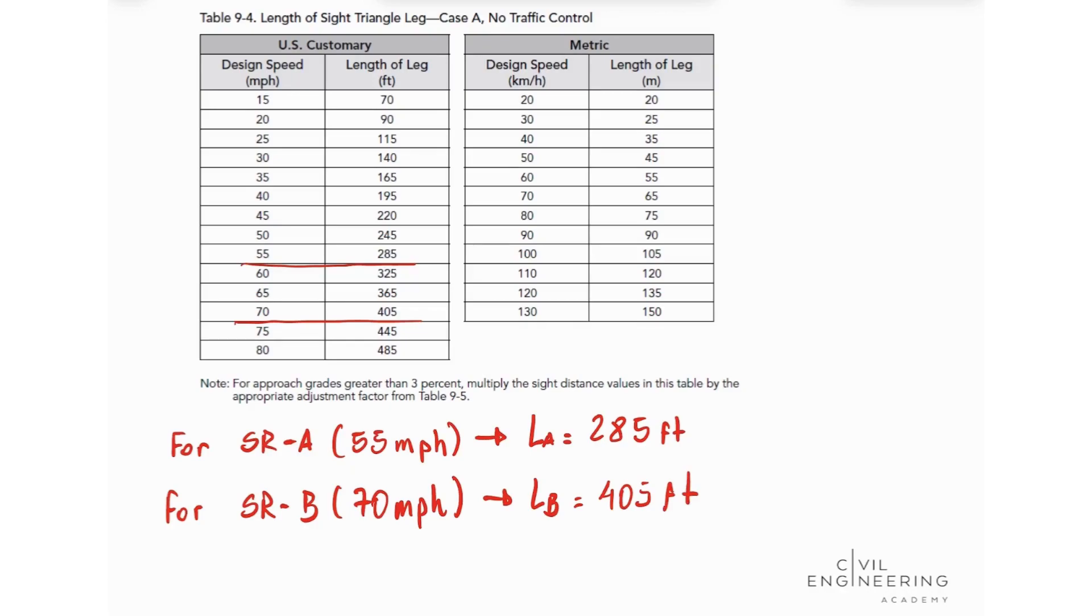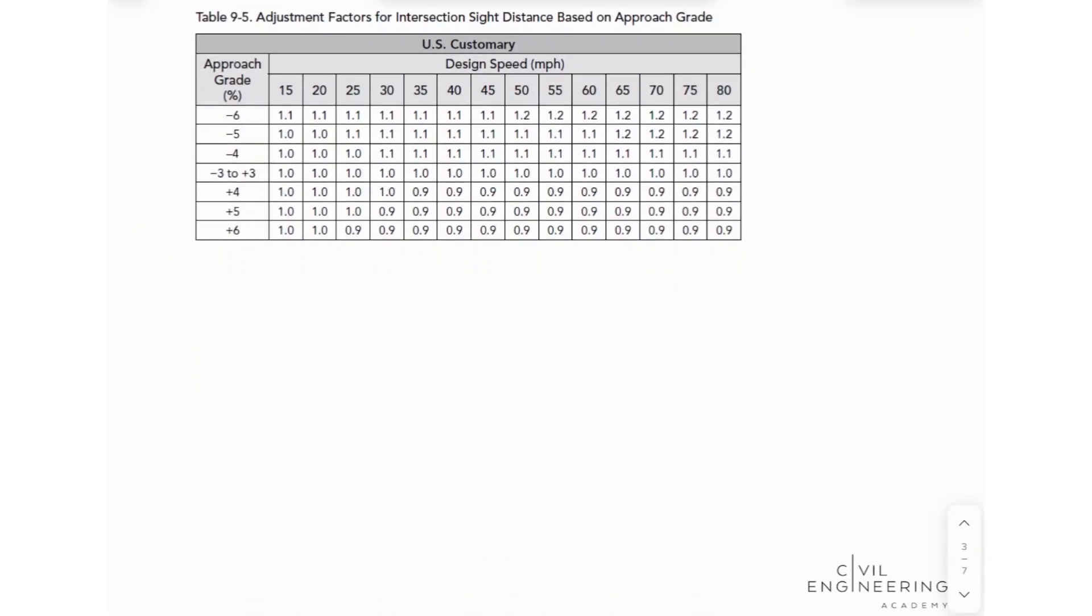Now we need to use some adjustment factors based on approach grades and for that we're going to look in another table. So this table 9-5 comes from page 9-42 in our AASHTO Green Book. And we're going to see that for our State Route A, we need to use the adjustment factor to correct the length. So we got that the length for State Route A at 55 miles per hour is equal to 285. But we need to multiply this by the adjustment factor for the intersection side distance based on approach grade.